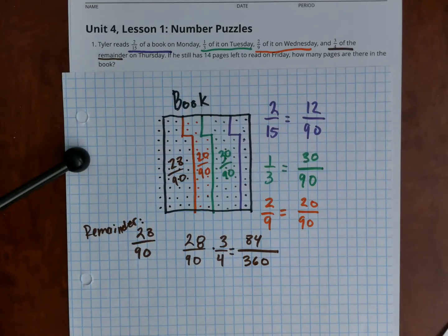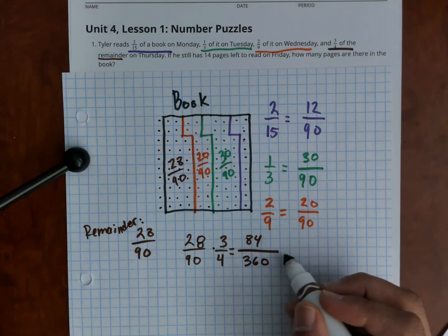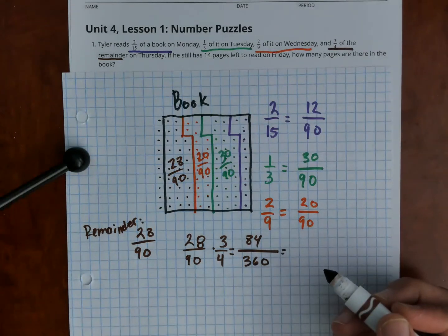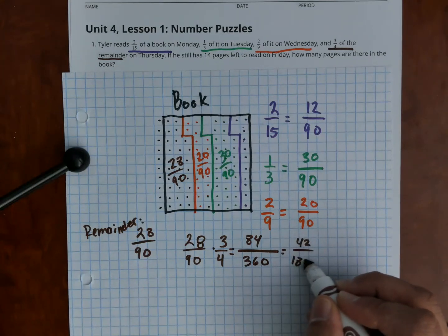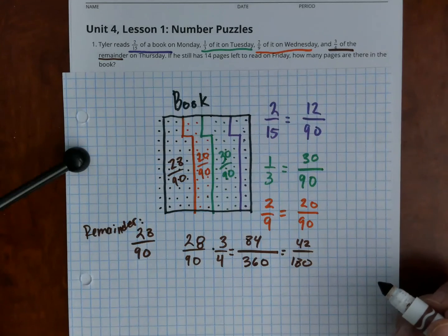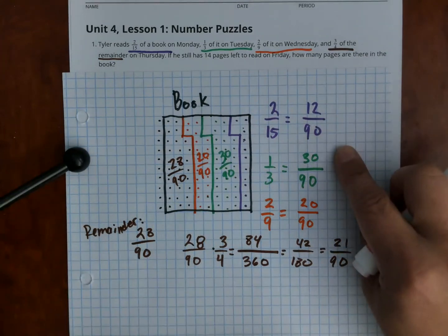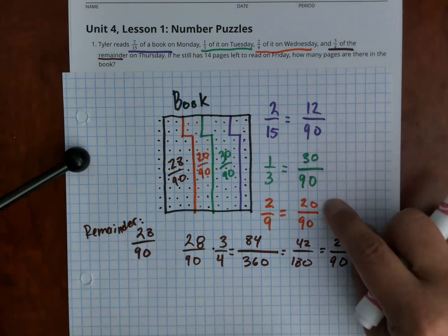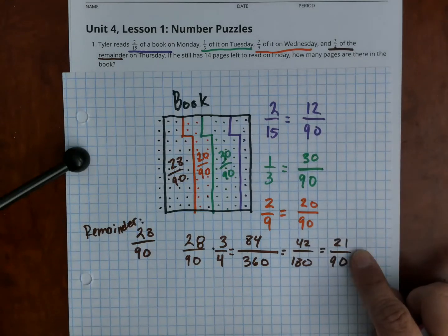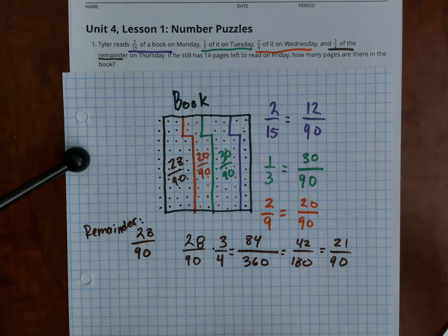Now I simplify 84 over 360: dividing by 2 gives 42 out of 180, and dividing by 2 again gives 21 out of 90. So now we know what Tyler read every single day: 12 out of 90 on Monday, 30 out of 90 on Tuesday, 20 out of 90 on Wednesday, and 21 out of 90 on Thursday. Remember, 90 is not the number of pages — it's a fraction of pages.